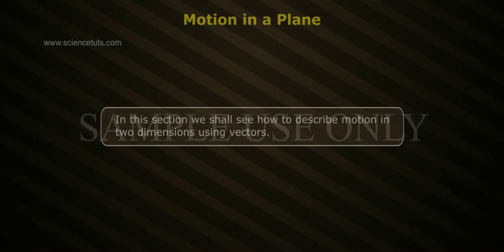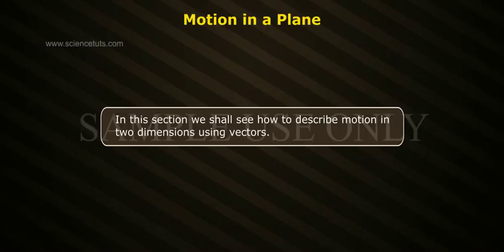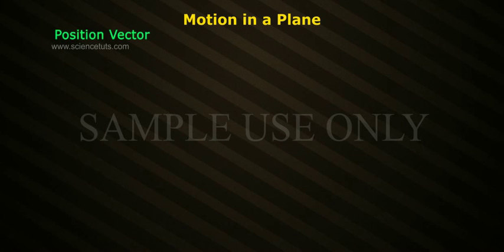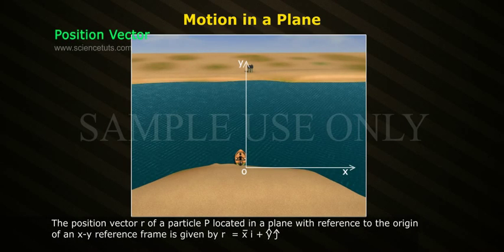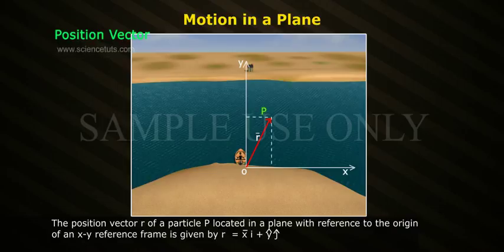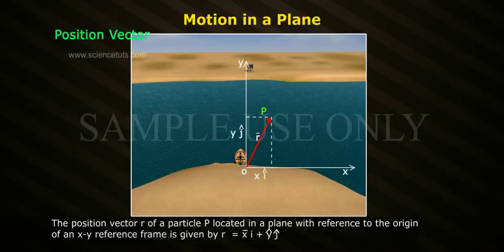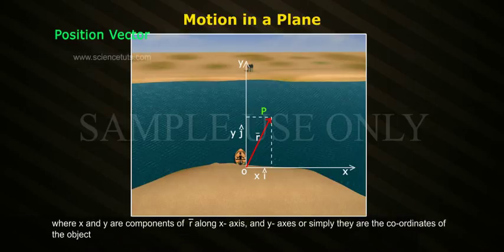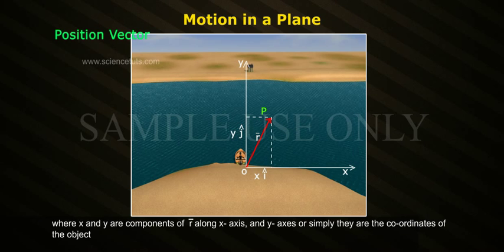Motion in a Plane. In this section we shall see how to describe motion in two dimensions using vectors. The position vector R of a particle P located in a plane with reference to the origin of an XY reference frame is given by R bar equals X i-cap plus Y j-cap, where X and Y are the coordinates of the object.